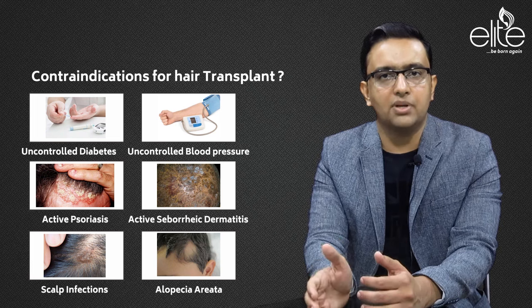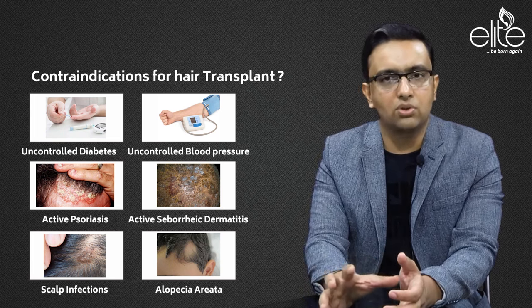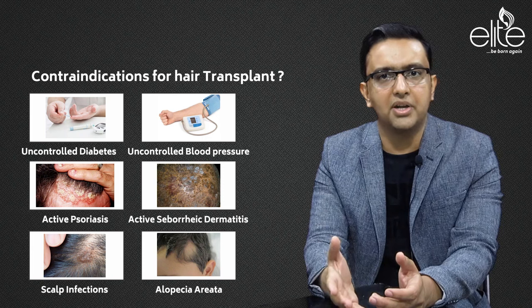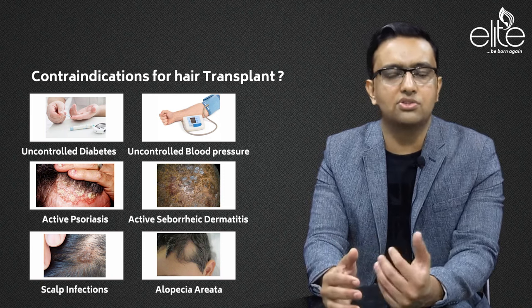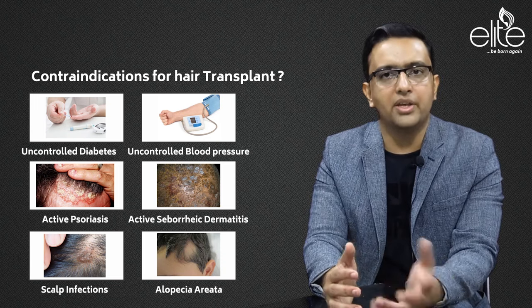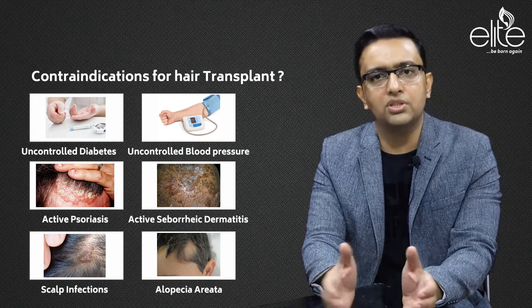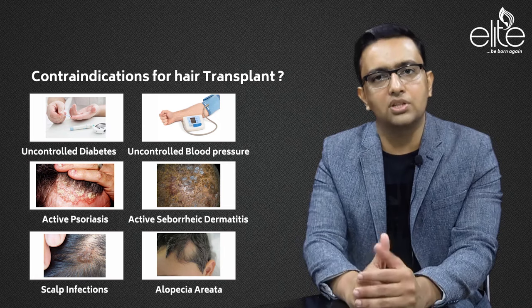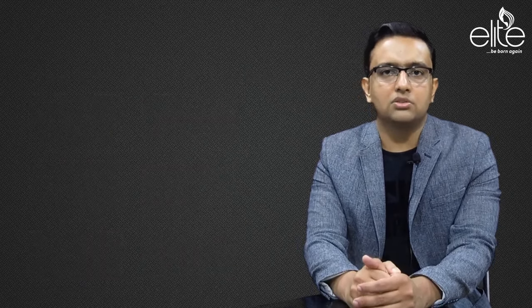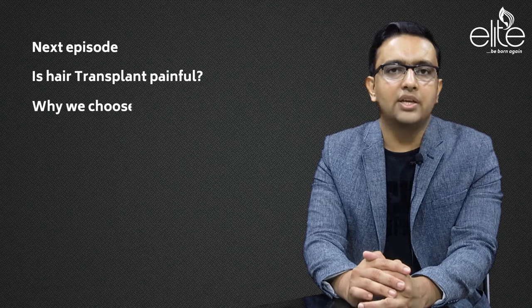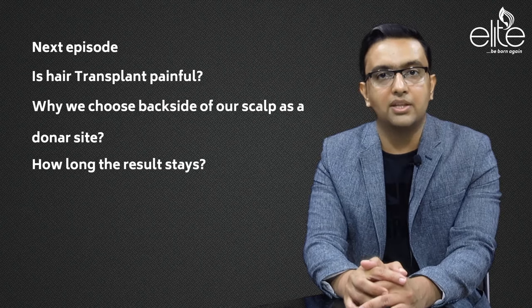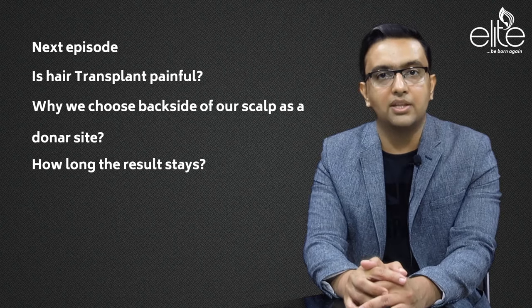The last question: are there specific contraindications for hair transplant? Contraindications include any kind of uncontrolled medical disease such as uncontrolled diabetes, high blood pressure, or any other medical condition. Second, any topical skin infection of the scalp, such as active psoriasis or seborrheic dermatitis. There are also certain types of alopecia such as alopecia areata or trichotillomania. These need to be evaluated in the initial counseling, and contraindications need to be ruled out before proceeding with hair transplant.